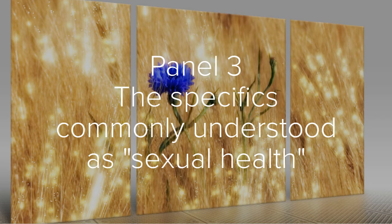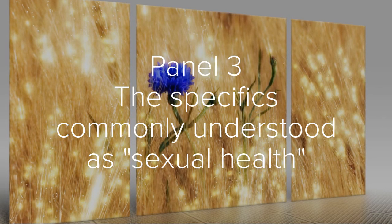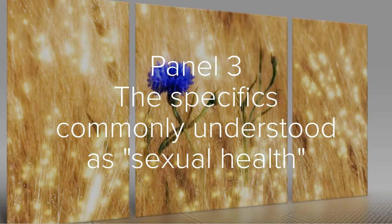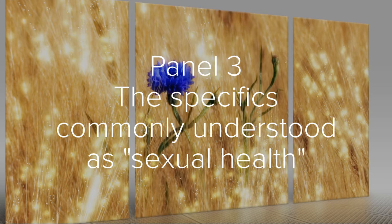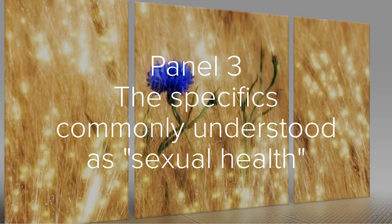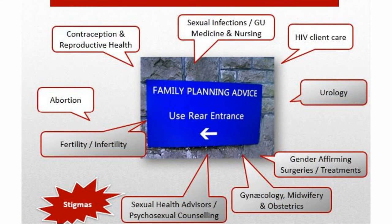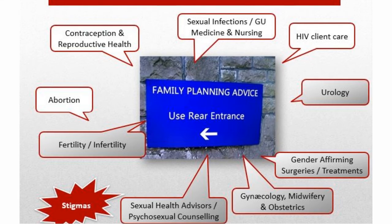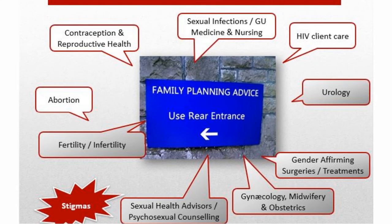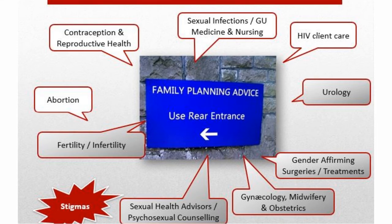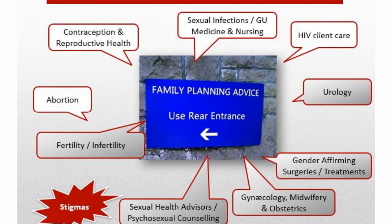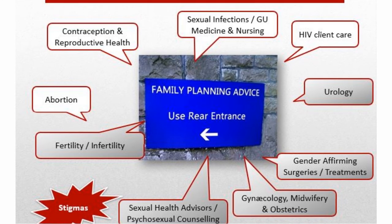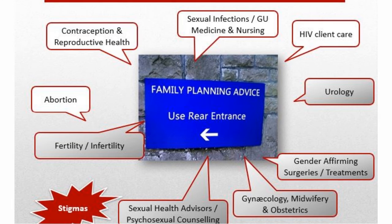The third and final panel covers the different terminologies that are used when people generally think of sexual health. For example, if you were to tell someone you've been doing a session on sexual health, what's the first thing that comes to mind? Often those first thoughts are the traditional services that fall under the umbrella of sexual health — such as genitourinary healthcare, HIV services, contraception, and reproductive health — but think of some of the wider ones as well that people may not normally consider in relation to sexual health, but indeed they are.